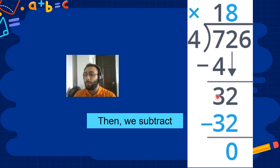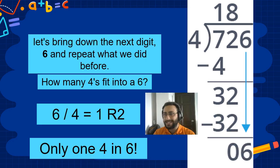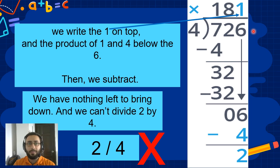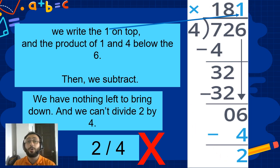Nice. Now we bring the next digit down. How many 4's fit into 6? Only 1. So 1 times 4 equals 4. 6 minus 4 equals 2. We don't have any more digits, so we are finished. This is our quotient and this is our remainder.